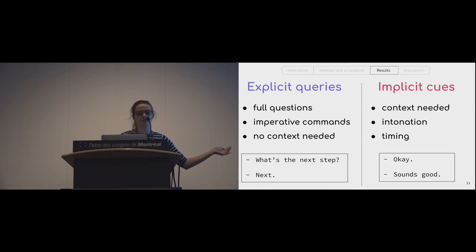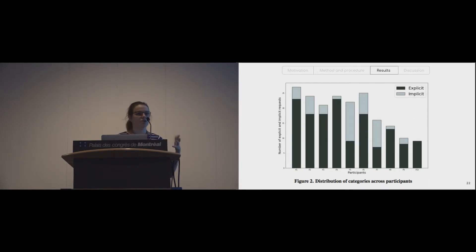The examples we have here - 'okay' or 'sounds good' - could be a signal that the person has received the information, or they could say the same thing with a different intonation, signaling that they're ready to move on to the next step. When we look at the distribution between explicit queries and implicit cues, here in dark gray are explicit queries - they dominate, but a quarter of all system utterances were triggered by some sort of implicit cue. And all but one participant used some sort of implicit cues during their task. Currently, all those light gray queries are not even captured by the existing system protocols.